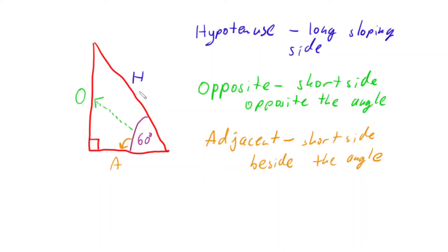So we have a hypotenuse side labeled H, an opposite side labeled O, and an adjacent side labeled A.